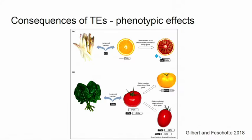Transposable elements are not just jumping around in genomes — they actually have real phenotypic consequences. For example, my favorite, the blood orange, is actually due to a transposon. And there are also effects in the tomato. So there are many different phenotypic effects.